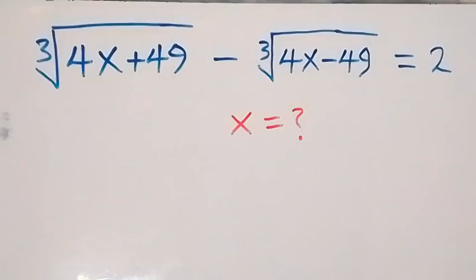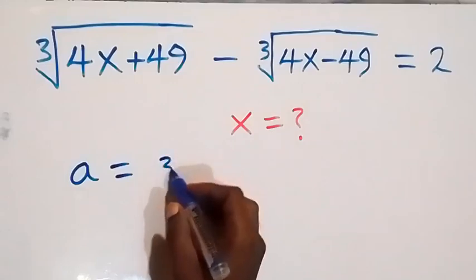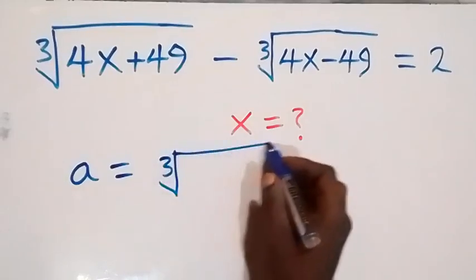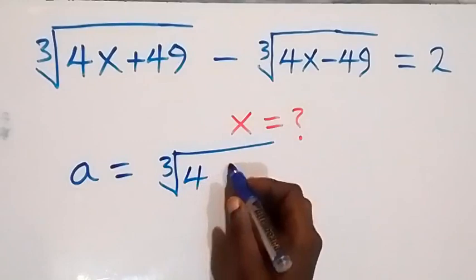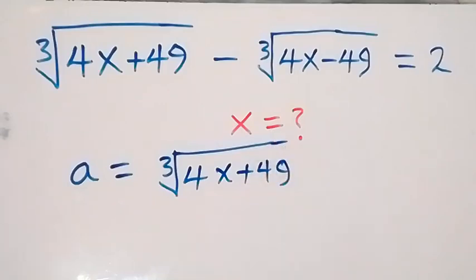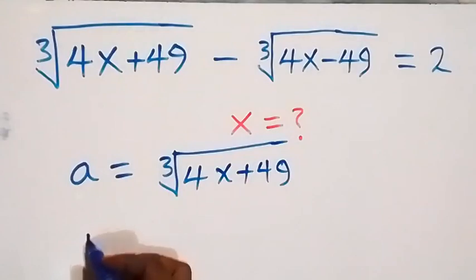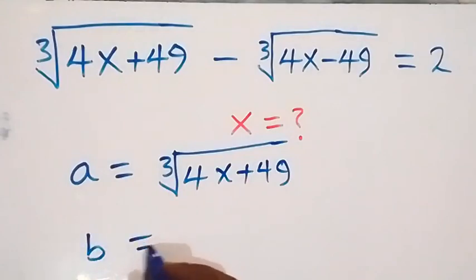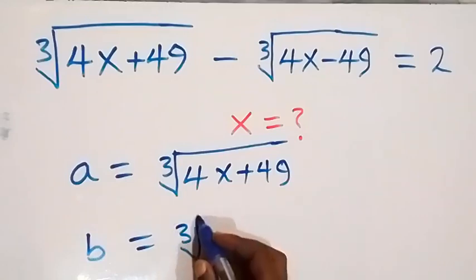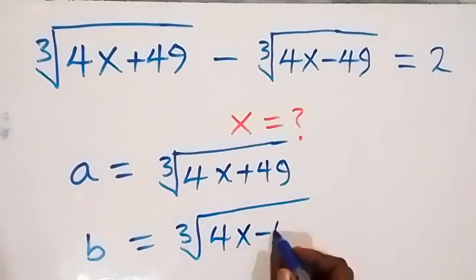Let's represent the cube root of 4x plus 49 with a letter. Let A be equal to the cube root of 4x plus 49, and also let a letter B represent the cube root of 4x minus 49, so we have B equals the cube root of 4x minus 49.